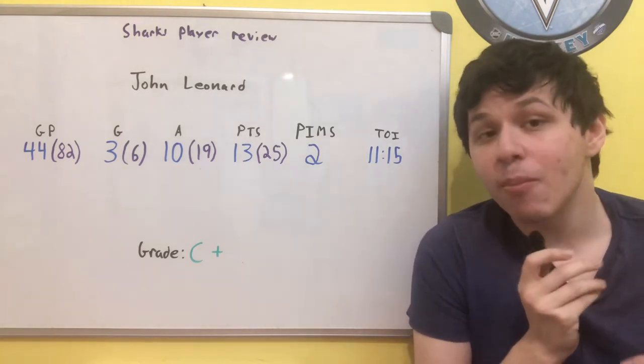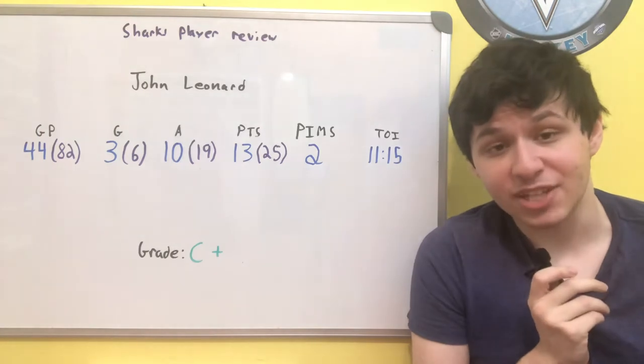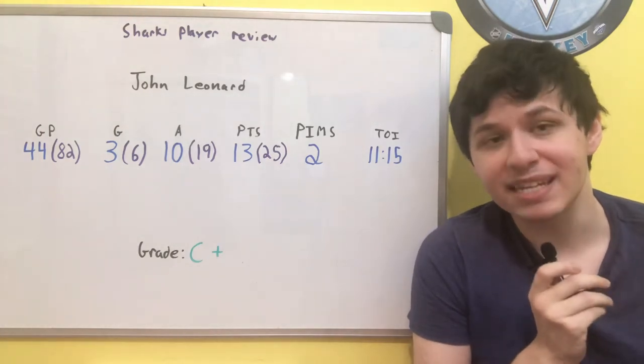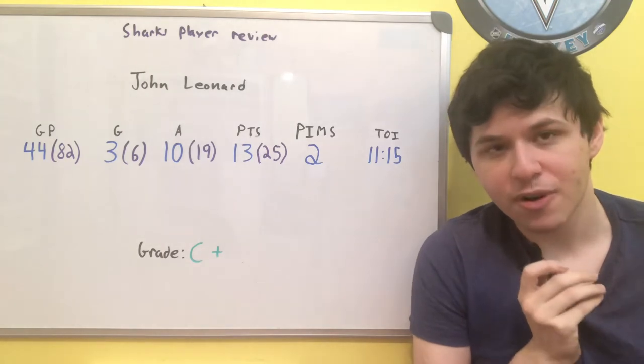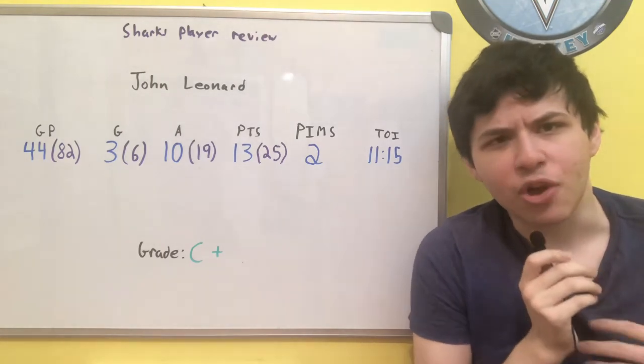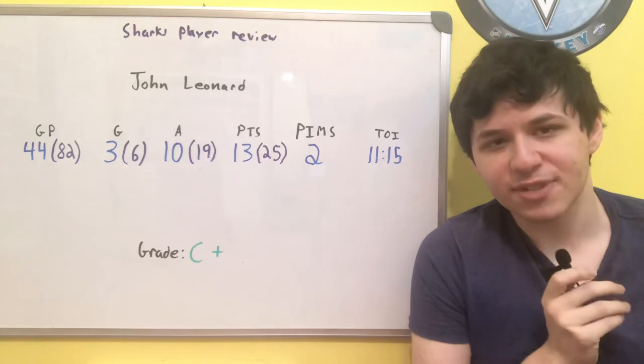So it kind of reminds me of Timo Meier when he first came into the NHL. Meier was able to use his speed, his size, his skill to get into decent positions to be able to score, but he would also end up taking a lot of low-percentage shots.